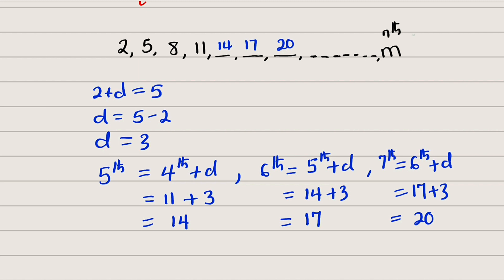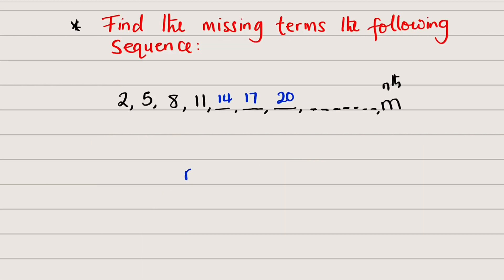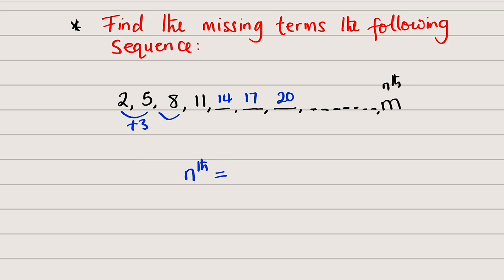But the question is: how can we obtain the nth term? Now let us formulate a formula that will guide us in finding every single term in this sequence. Remember, we are looking for the nth term, and this nth term can serve for every member here. From every term to the subsequent term we need to add 3, and this works for all the terms. Therefore we need the 3 times table — 3n.